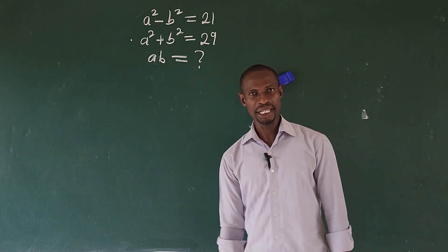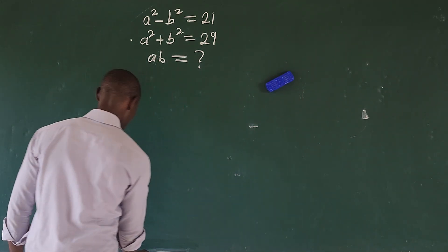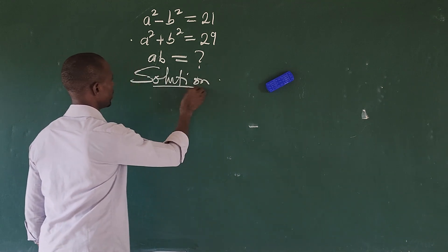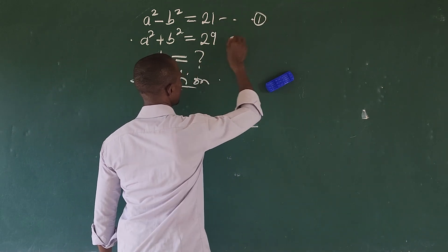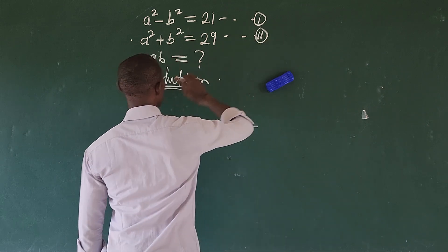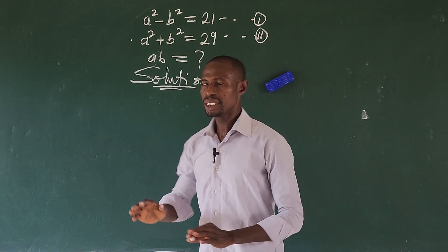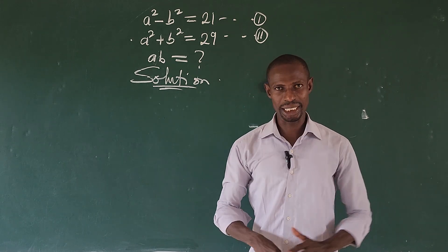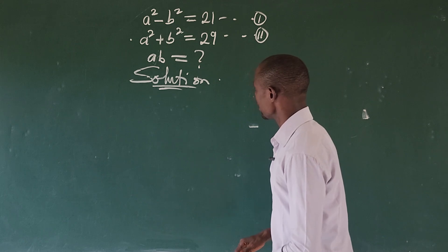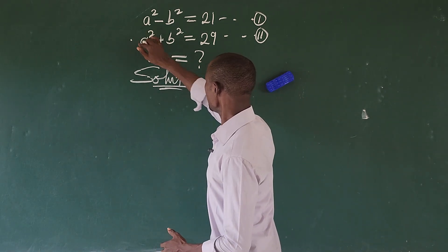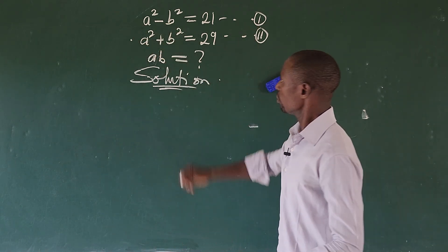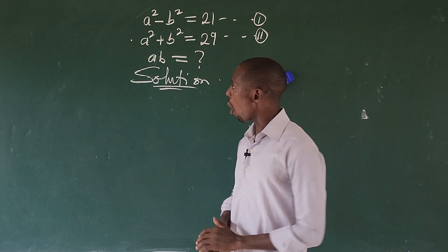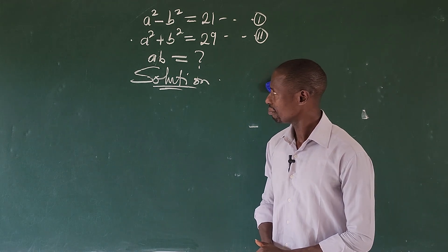Let's label these equations — equation one and equation two. These form a simultaneous equation with two quadratics. Since we have 'a' in both and 'b' in both, we can solve by substitution or elimination. Let's use the elimination method.